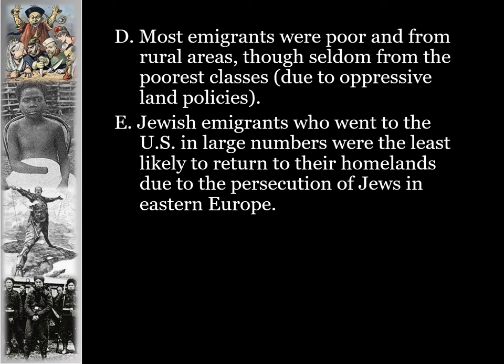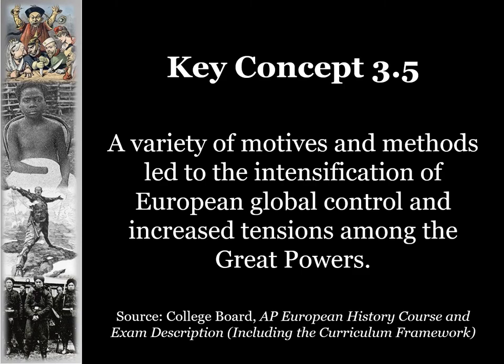Jewish immigrants who went to the U.S. in large numbers were the least likely to return to their homelands due to the persecution of Jews in Eastern Europe throughout the 19th century, particularly the pogroms in Russia.